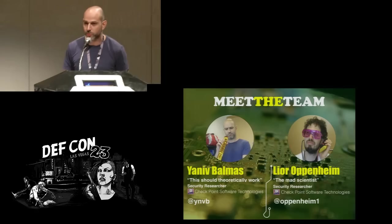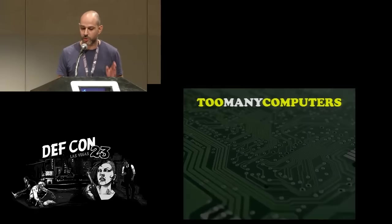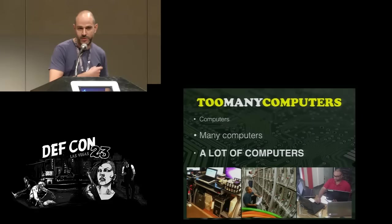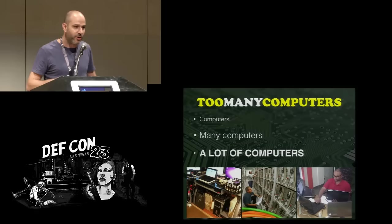Let's dive right into our problem. Our problem, as with many other computer science problems, starts with computers. We have computers — we have many computers, we actually have a lot of computers. Each of these computers actually needs a keyboard, video, and mouse set in order to operate. When we have a lot of these computers then we also have a lot of keyboards, a lot of video and a lot of mice, and this creates a whole lot of mess on our desk.